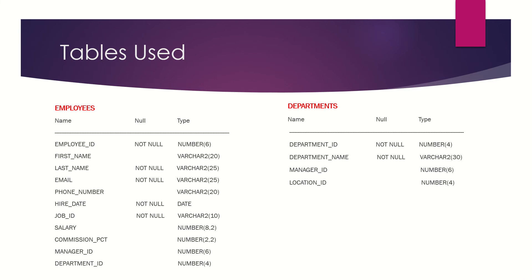In order to better explain the concepts, I will be using the classic example of the employees and departments tables, which are present in the default HR schema throughout this course. In the employees table, employee ID is the primary key, which means it has as many distinct values as the number of rows in the table. Similarly, department ID is the primary key in the departments table. Also, department ID is a foreign key in the employees table, and both of these tables will be joined using department ID as the join condition.